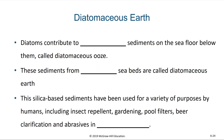As diatoms die, which they regularly do, their silica frustule will sink and settle down on the seafloor. Diatoms contribute to biogenous sediments on the seafloor below them. We call a sediment made primarily of diatom frustules a diatomaceous ooze. These layers will eventually become rock, and if this area of the seabed ends up being uplifted, the sediments from these ancient seabeds would be called diatomaceous earth. Diatomaceous earth is actually used in a variety of industrial processes by humans.